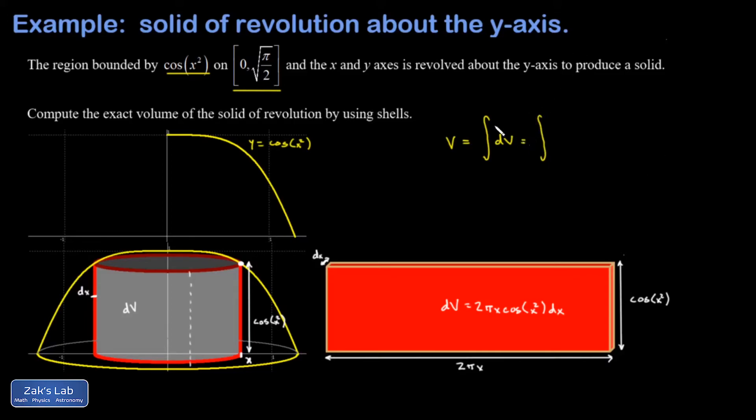So I'm ready to put limits of integration on this. I go all the way from x equals 0 to my terminating value of x which is the right end of this interval, so that's root pi over 2, and the thing I'm integrating is 2 pi x cosine of x squared dx.